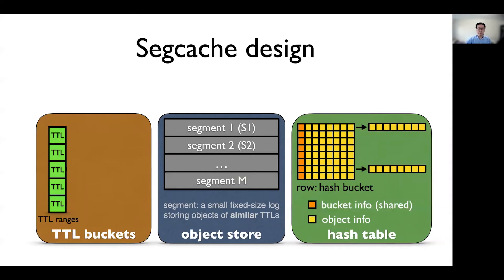The TTL bucket is an array of metadata, and each TTL bucket is responsible for one TTL range. From each TTL bucket, it links out a segment chain, and all the segments in the segment chain have the same TTL.